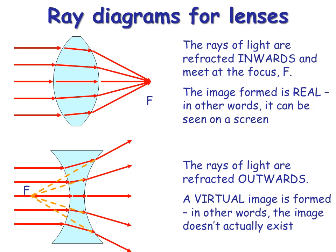So a convex lens is often called a converging lens. And a concave lens is often called a diverging lens. Because that's what they do to the light rays.